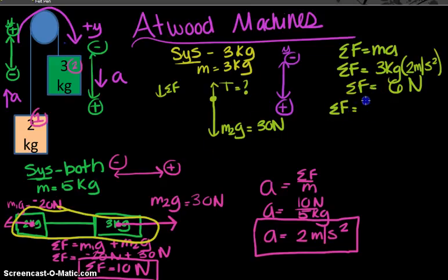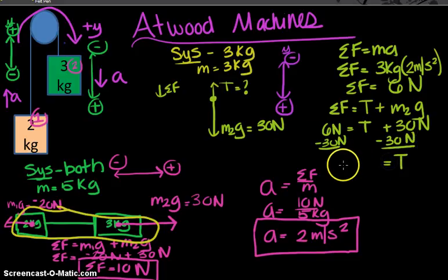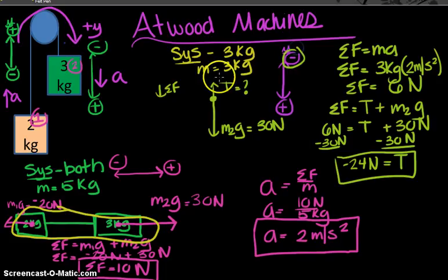This positive six, tension is my unknown plus a positive 30 for the weight. So if you subtract 30 newtons from each side, you end up with T equals negative 24 newtons. Does it make sense the tension is negative? Yeah, we have the upward is negative and this is an upward force.